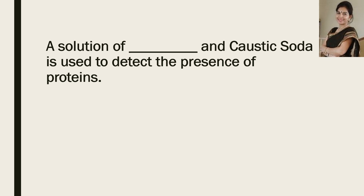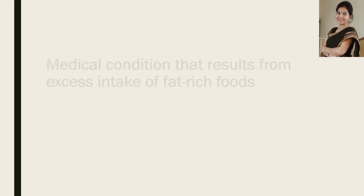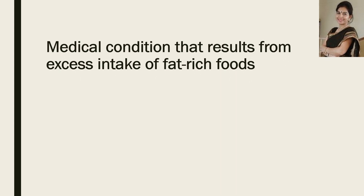Now the next question: a solution of DASH and caustic soda is used to detect the presence of proteins. You have to name the chemical. And the answer is copper sulfate.